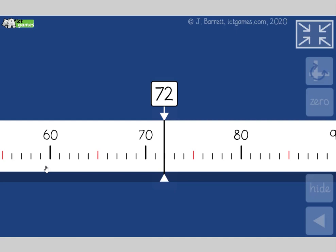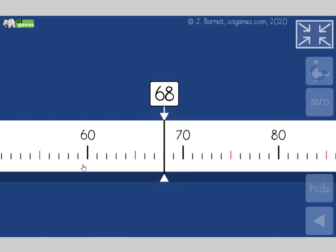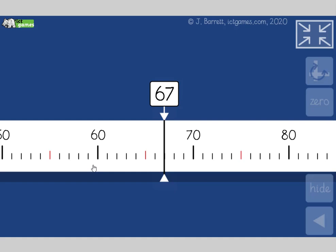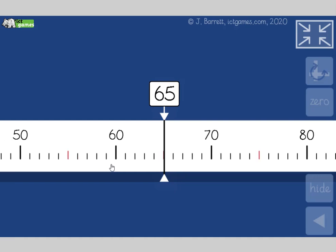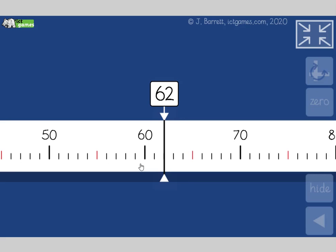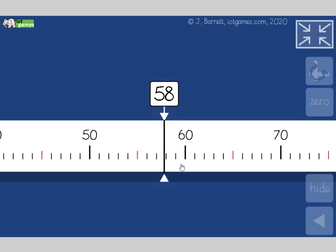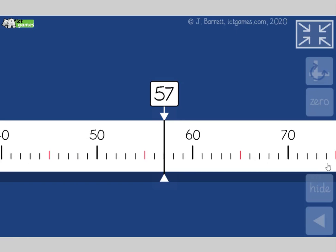You're going backwards in ones. Seventy-two, seventy-one, seventy, sixty-nine, sixty-eight, sixty-seven, sixty-six, sixty-five, sixty-four, sixty-three, sixty-two, sixty-one, sixty, fifty-nine, fifty-eight, fifty-seven. I'm just going to pause there.